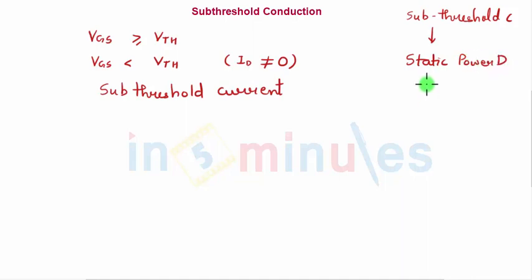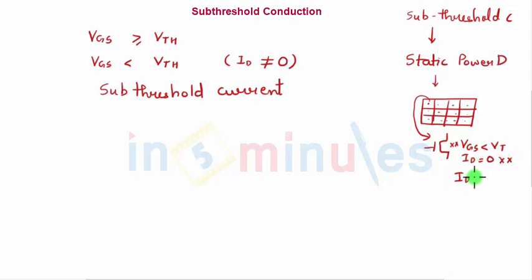In simple words, if you have to understand this, then assume that you have an array of memory where there are transistors present. Technically, let's magnify one of the transistors from this array. Here if VGS is less than VT, you want this transistor to be off and ideally ID should be zero. However, because of sub-threshold current, there will be some ID which will flow.